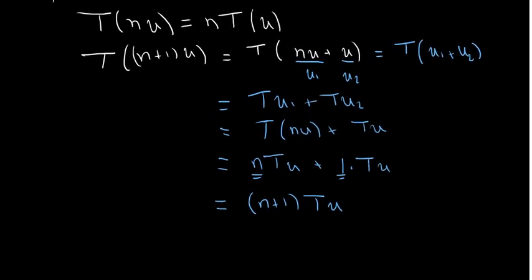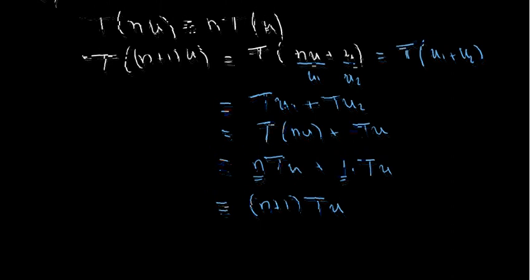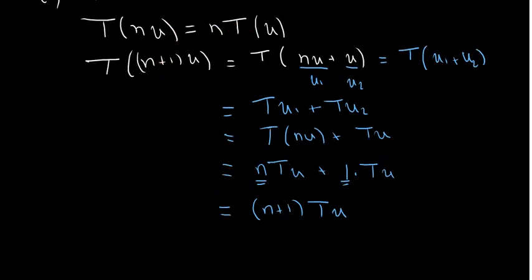We factorize and obtain (n+1)·T(u), which is the same relation as the induction assumption but with n equal to n+1. This implies the inductive step holds, and by the principle of mathematical induction the relation T(n·u) = n·T(u) is fulfilled for all n in the set of natural numbers.